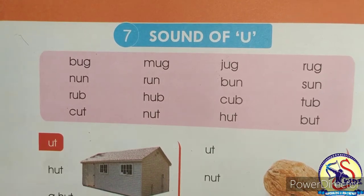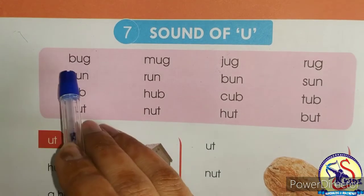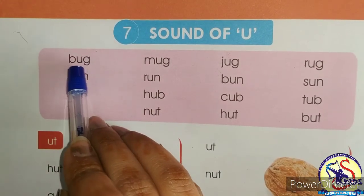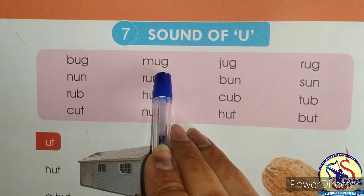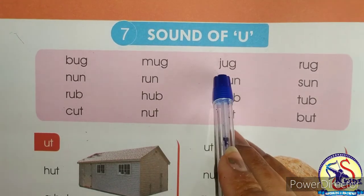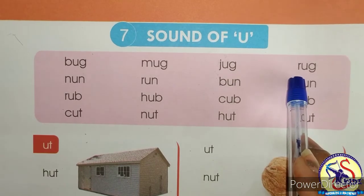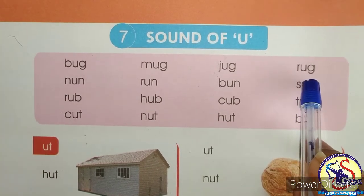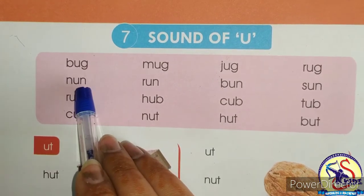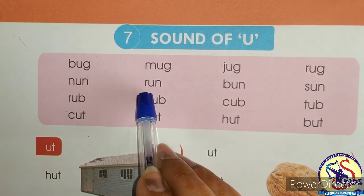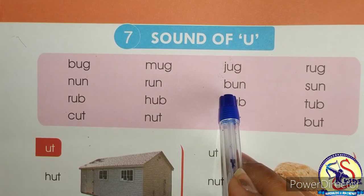Okay kids, now let's read three-letter words of vowel U. B-ag — bug. M-ag — mug. J-ag — jug. R-ag — rug. N-an — nun. R-an — run.